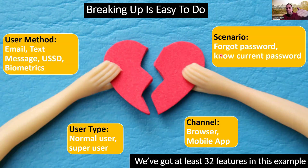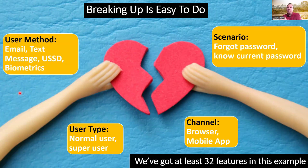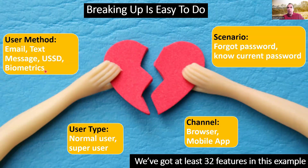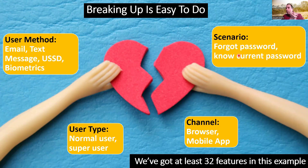We might even break it down further — look at mobile app and add iOS, Android, Huawei — and suddenly you've multiplied the 32 by 3 to get close to 100 features. Whatever is appropriate. Ideally we focus on the smallest possible feature that adds value. If we decide to do password reset via email for a normal user on the browser where they've forgotten their password — that's our first feature, and the whole team is focused on it. We're not having workshops to understand USSD; that would distract us from getting our first feature out, fully built and fully tested.